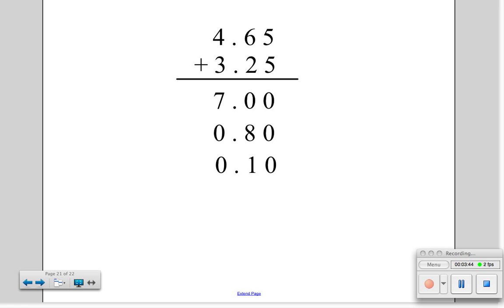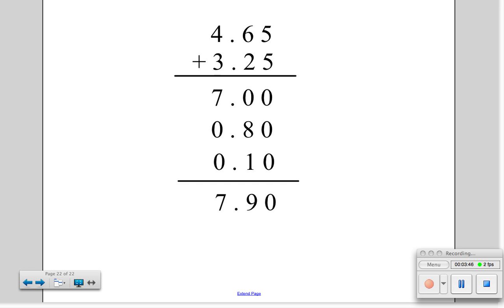Now, we get to add all the parts. 7 plus 8 tenths is 7 and 8 tenths. 7 and 8 tenths plus 1 tenth is 7 and 9 tenths.